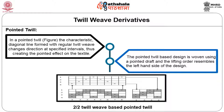End number 1 is drawn in heel shaft number 1, end number 2 in heel shaft 2, end number 3 in heel shaft 3, and end number 4 in heel shaft 4. End number 5, whose interlacement is similar to end number 3, is drawn in heel shaft number 3. Similarly, end number 6 is similar to end number 2 and drawn in the same heel shaft. End number 7 is similar to end number 1. Though the design repeats on eight ends and four picks, only four heel shafts are required, and the lifting order is also on four ends and four picks.